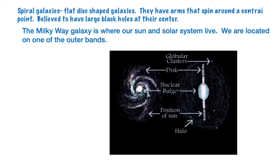Spiral galaxies are flat, disk-shaped galaxies with arms that spin around a central point. They are believed to have large black holes at their center. The Milky Way galaxy, shown here, is our galaxy. We are located on one of the outer bands at the edge of this galaxy.